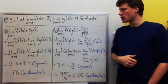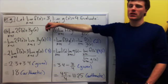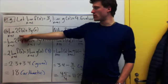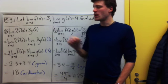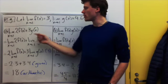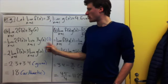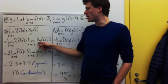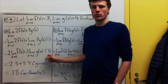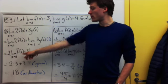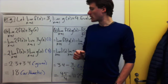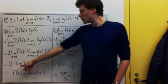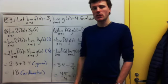Let's apply these laws. Suppose f(x) goes to three as x goes to one, and g(x) goes to four as x goes to one. Let's evaluate the limit of 2f(x) + 3g(x). First, this is a sum of two functions, so we break it apart using rule one: the limit of 2f plus the limit of 3g. Then we pull the constants out using rule three, giving 2 times the limit of f plus 3 times the limit of g. Plugging in, we get 2 times 3 plus 3 times 4, which is 18.